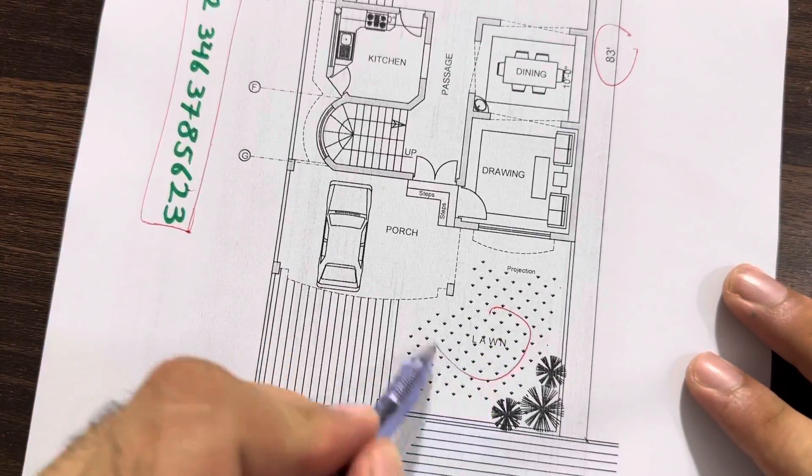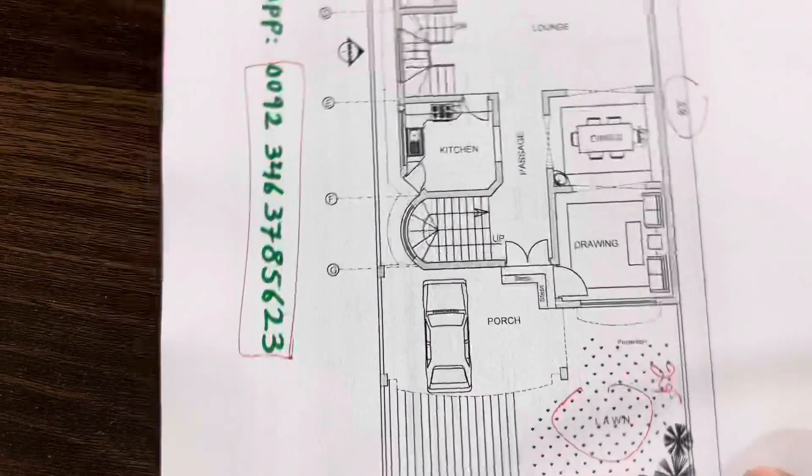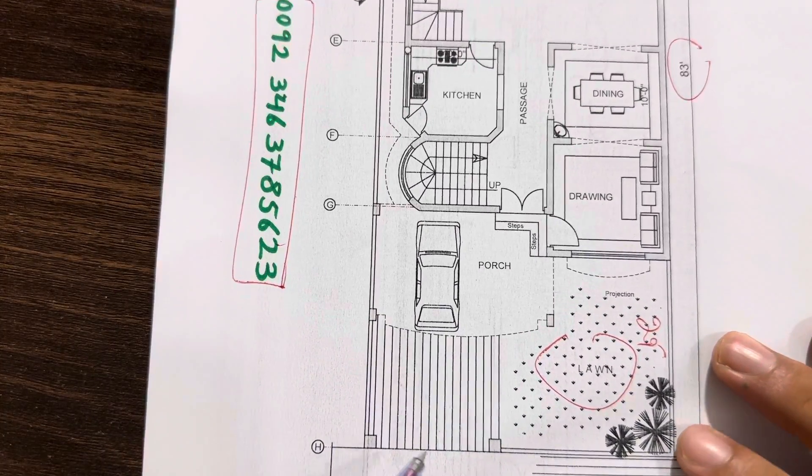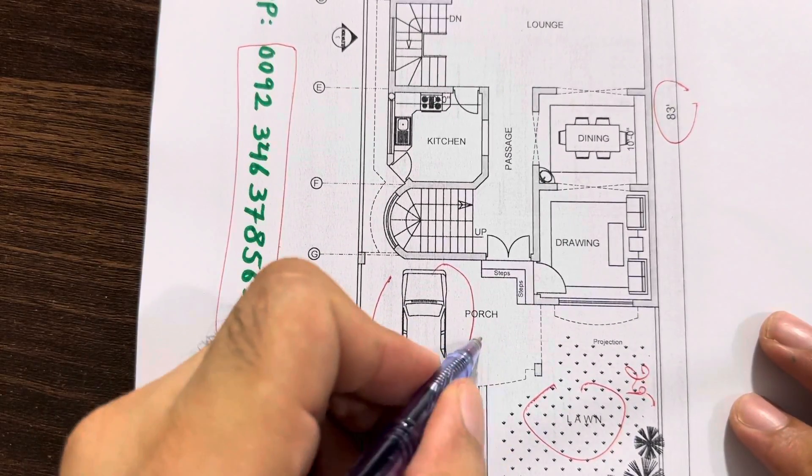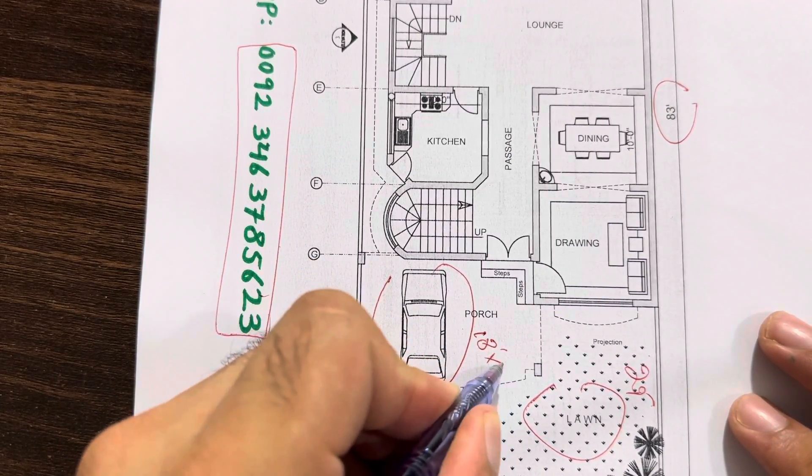This is lawn, which is 29 feet. You can see here, this is main gate. So directly you will find the porch size is here, 18 feet by 14 feet.